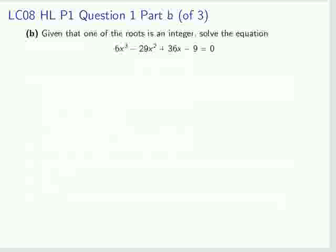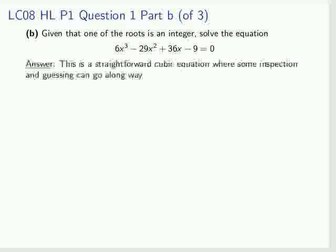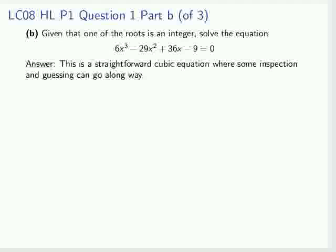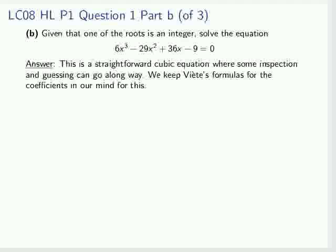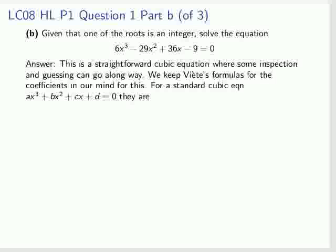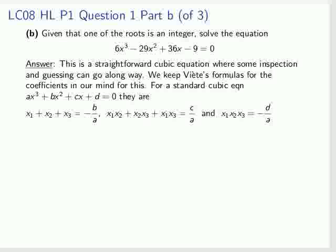One of the roots of this equation, a cubic, is an integer, and we need to solve it. This is a straightforward cubic equation where some inspection and guessing can go a long way. We keep Viète's formulas for the coefficients in mind. For a cubic equation ax³ + bx² + cx + d = 0, they are those three: minus b over a equals the sum of the three roots.